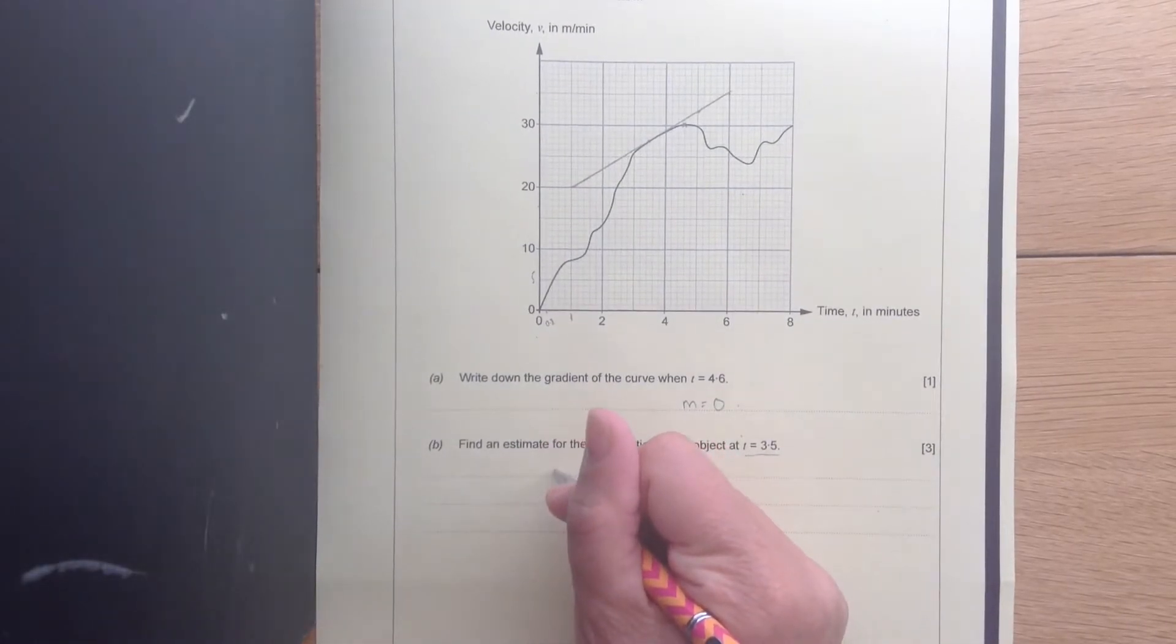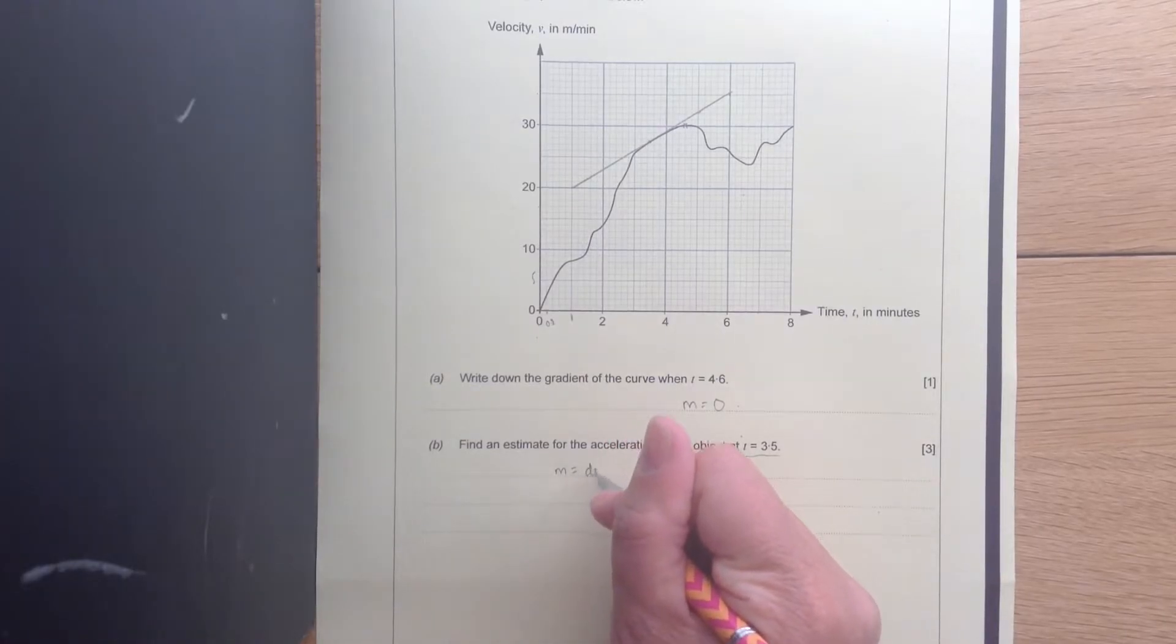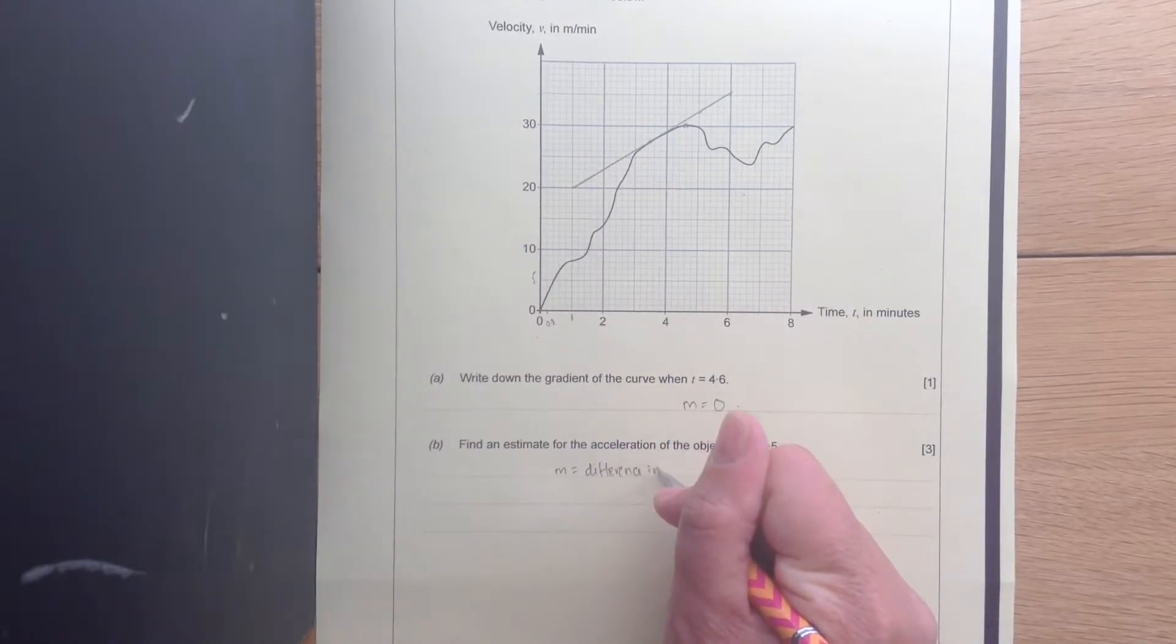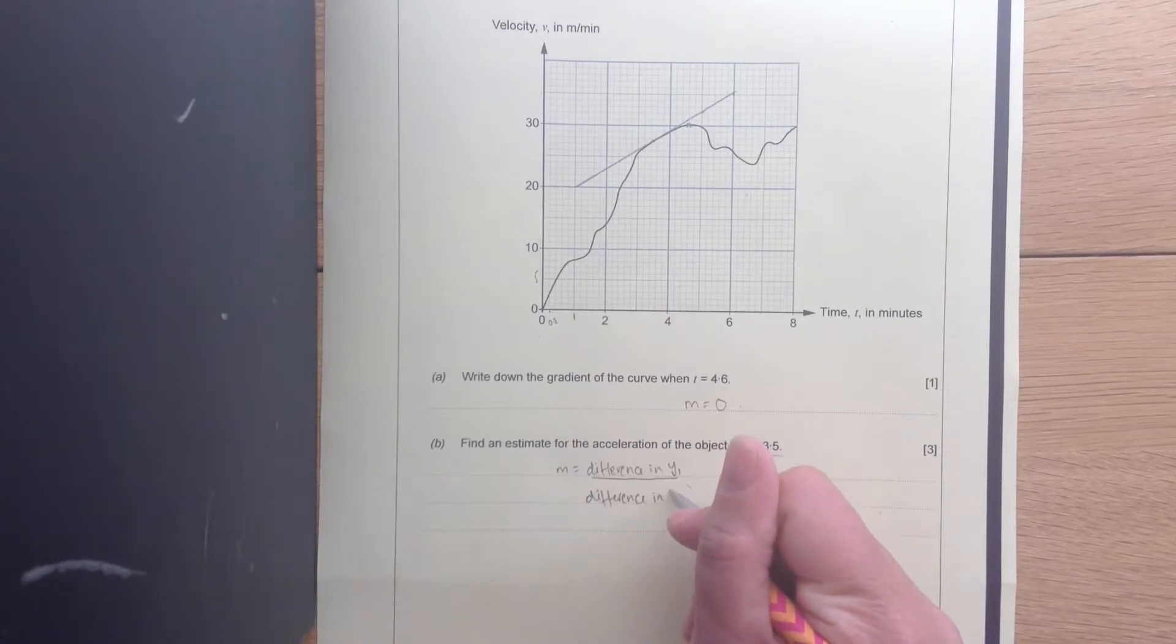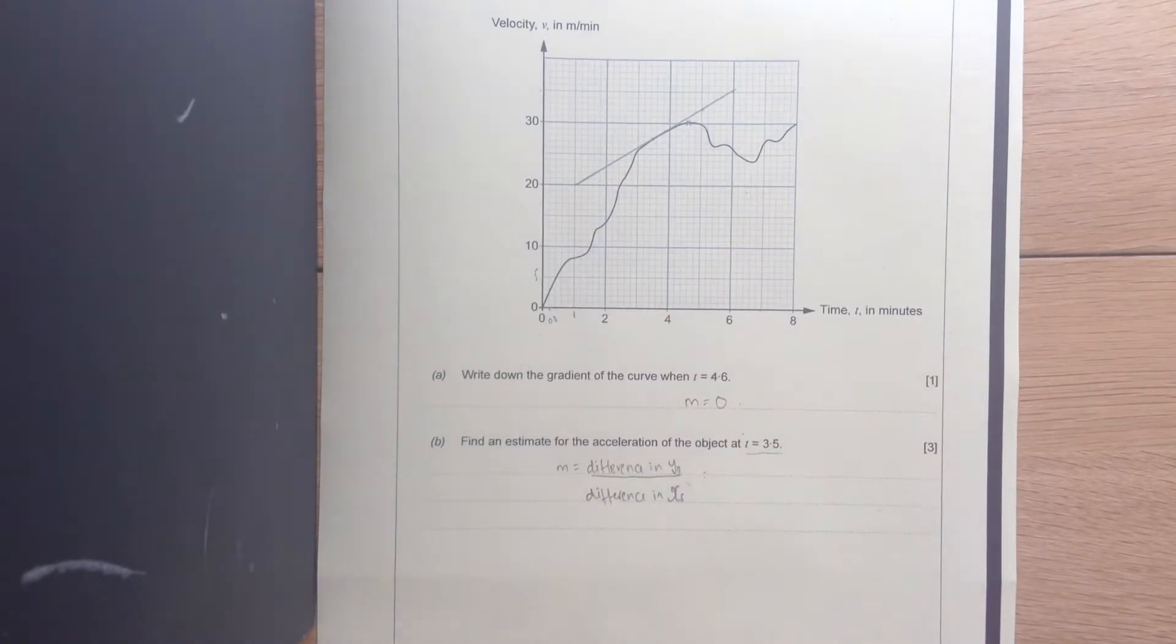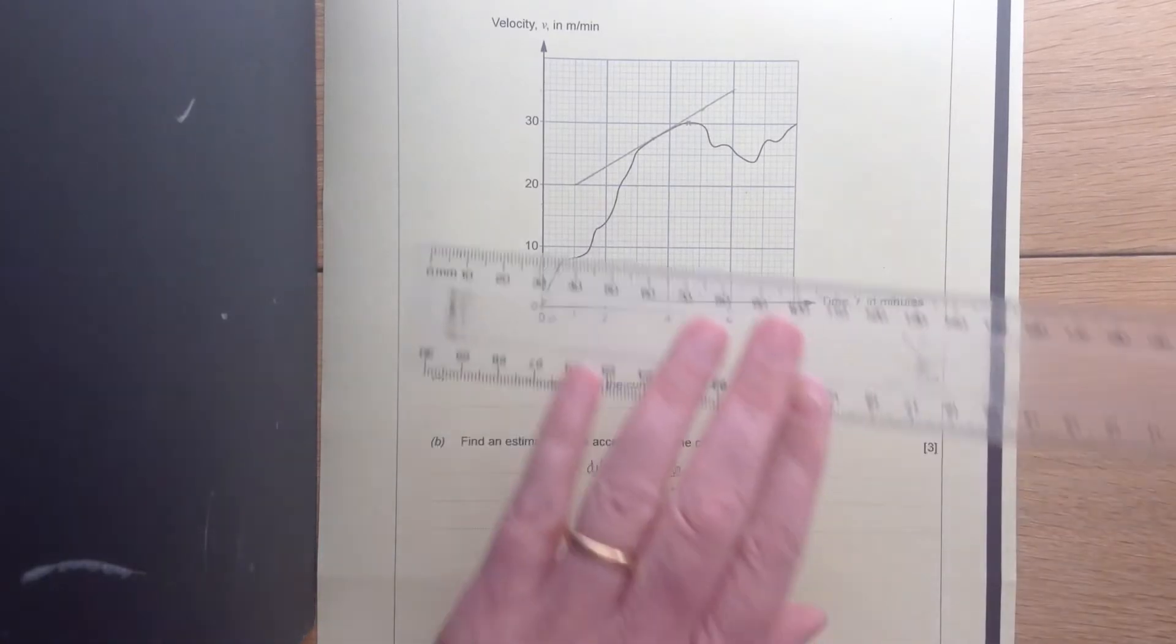Now, our gradient, M, is found by the difference in y's over the difference in x's. So let's have a little look then. We'll do the triangle on it. It'll make it easier.